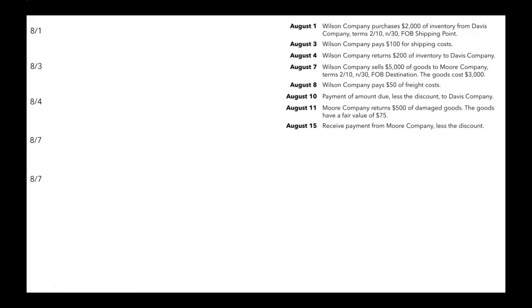On August 1st, Wilson Company purchases this inventory. Their inventory is increasing, so we debit inventory. They paid on account, so we credit accounts payable for $2,000.